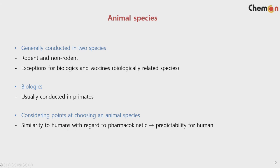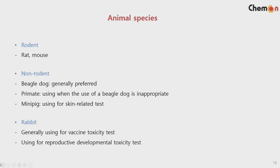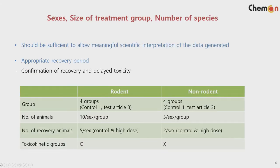For rodents, rat and mouse are usually used. For non-rodents, the most preferred would be the Beagle dog; if not possible, primates. For skin-related tests, the mini pig is used, and if not possible, the Beagle dog can be substituted. For rabbit, vaccine toxicity testing and reproductive and developmental toxicity testing are where rabbits are typically used.